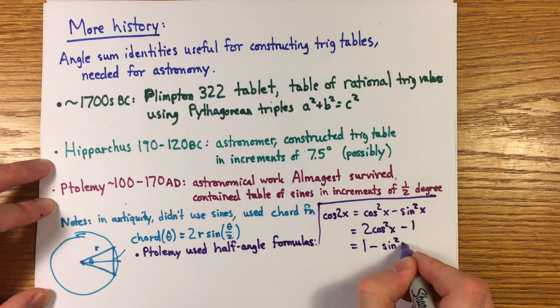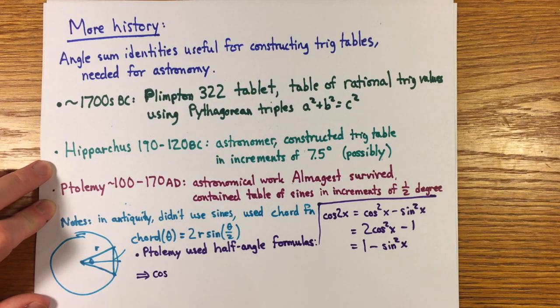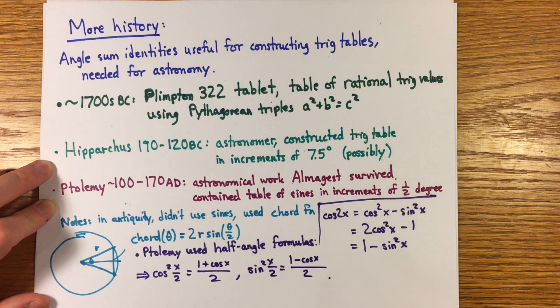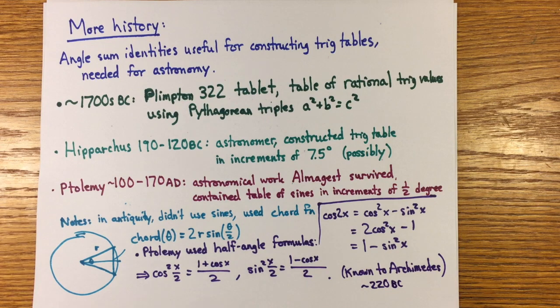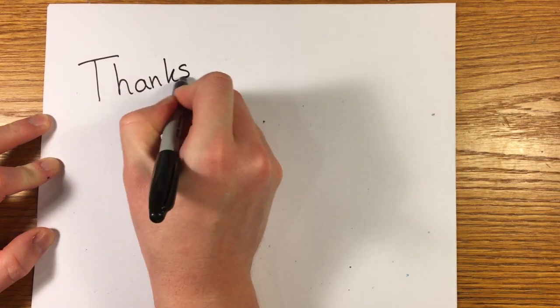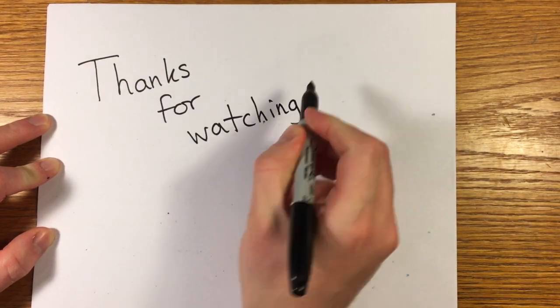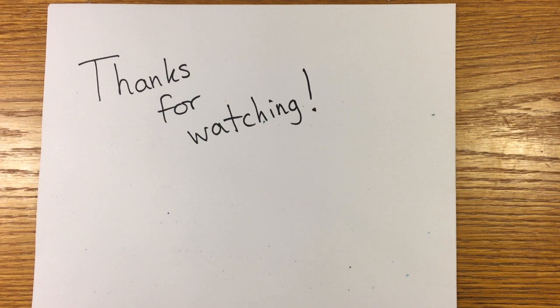Of course the half angle formula in some form must have been known to Archimedes perhaps 400 years earlier because that's what he used to find the perimeters of regular polygons in order to estimate Pi. That should give you some alternatives to reliance on Euler's identity to prove or recall the angle sum identities which are much older than Euler's identity. Thanks so much for watching. Let me know in the comments if you've also seen lecturers prove the angle sum identities from Euler's identity. Let's call them out and stop this terrible practice.